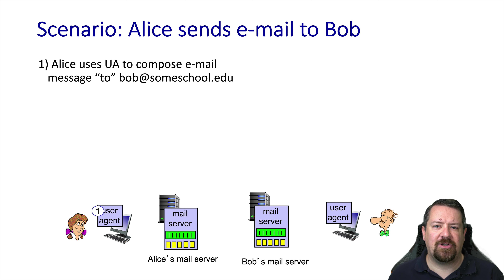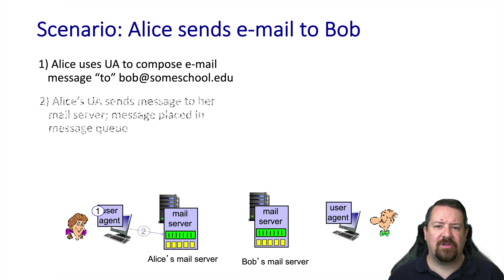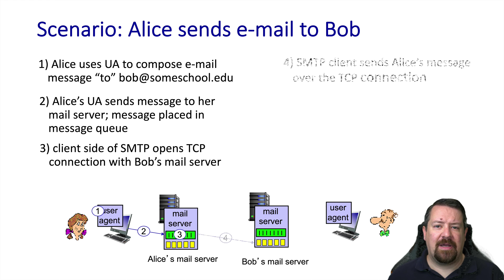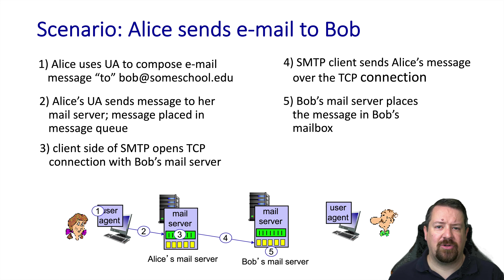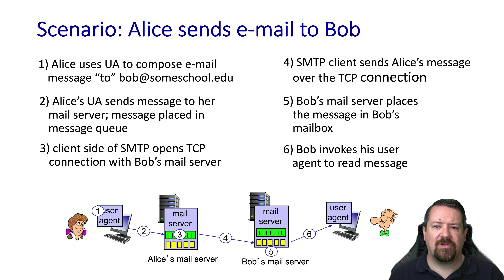Let's look at an example of an email exchange. Alice is going to use her email client to compose a message to Bob, who is at another institution. When Alice sends the message, her client communicates with the server. Once her message is placed in the outgoing email queue on her email server, her server will look up the server for the remote institution and establish a connection to it. Once the TCP connection is open, SMTP can be used to transfer the message. Bob's email server will look at the to field, recognize Bob's email address, and put it in his mailbox. Later on, Bob can use his mail client to check his mailbox and retrieve the message.